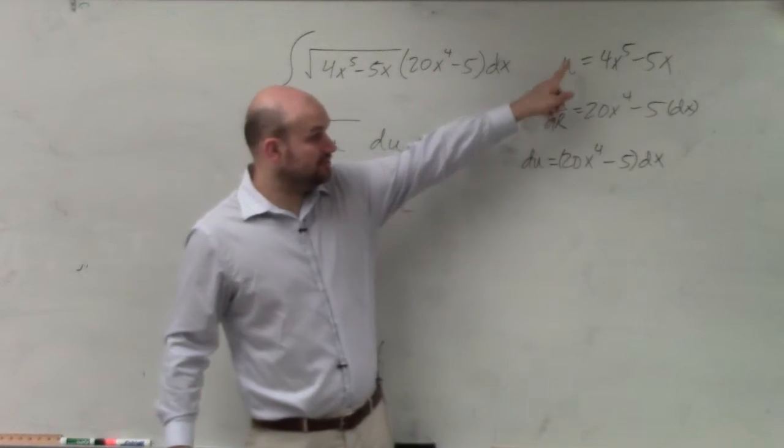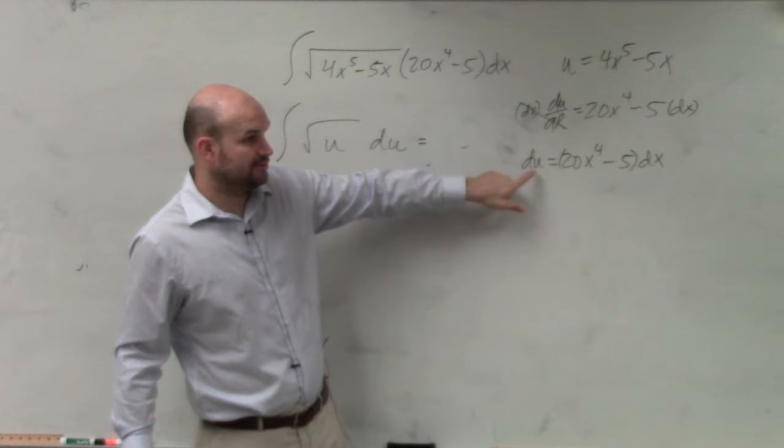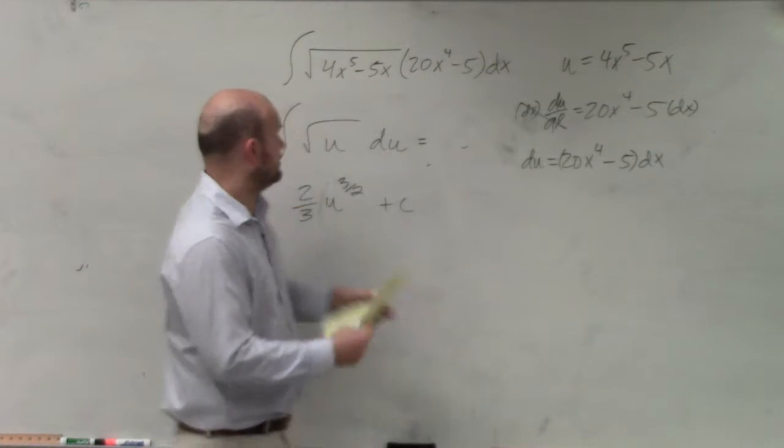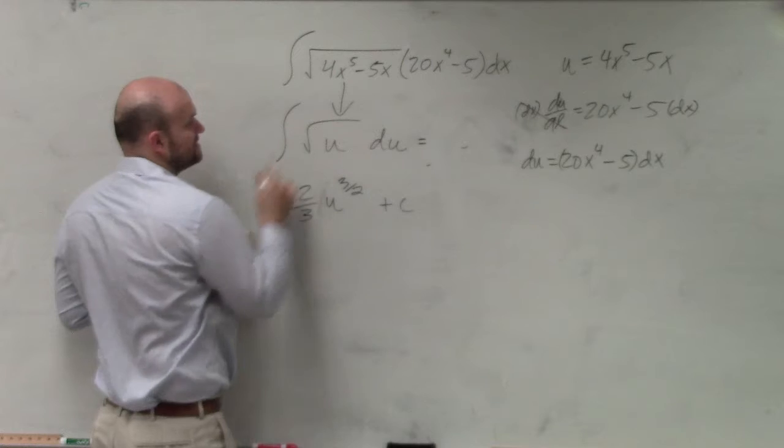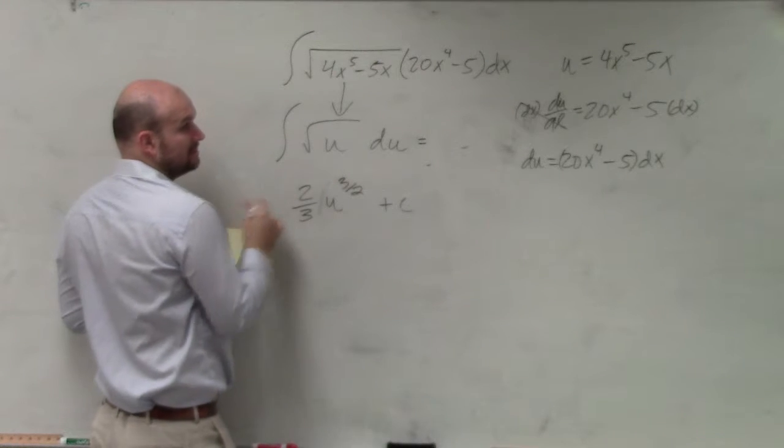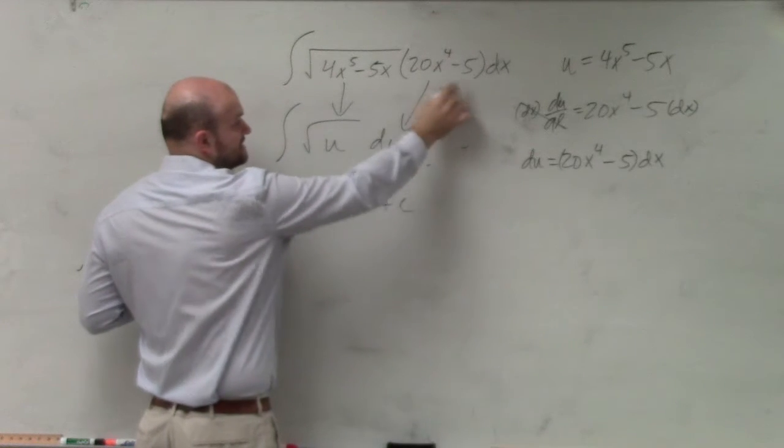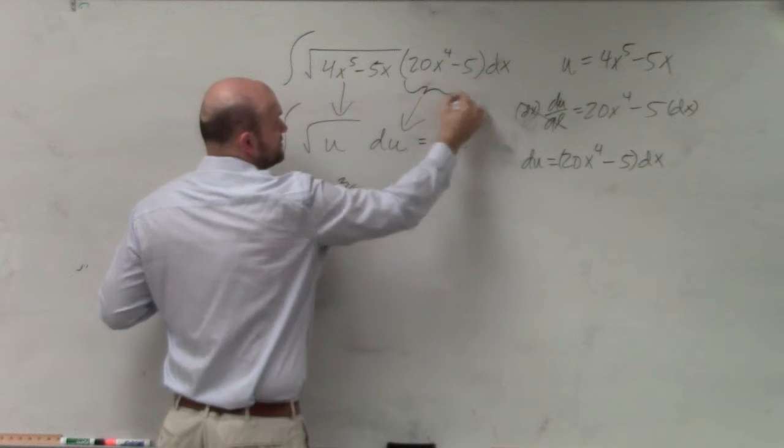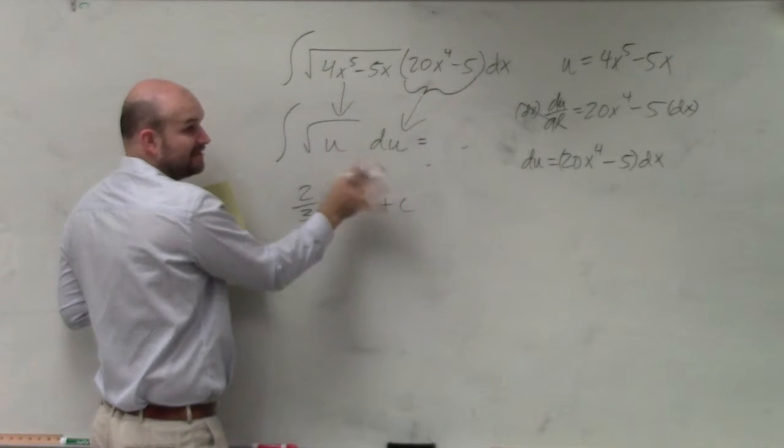This is u. This is du. Would you agree with me? Yes. So what I'm saying is that's square root of u. That is du. This whole thing is equal to du.